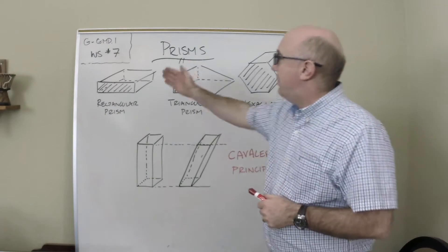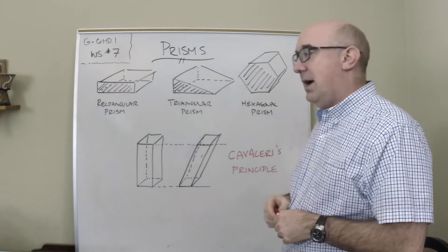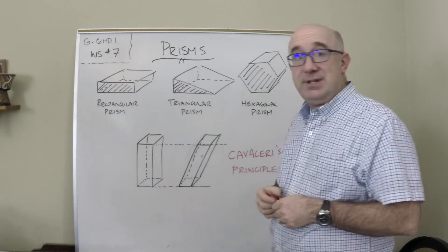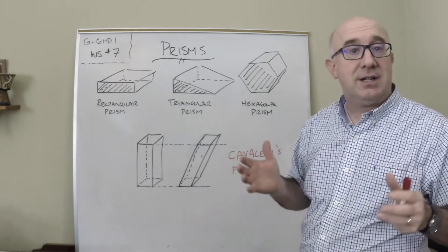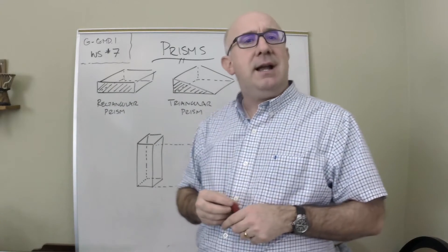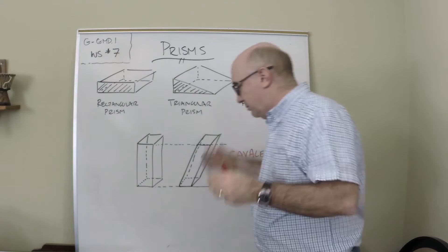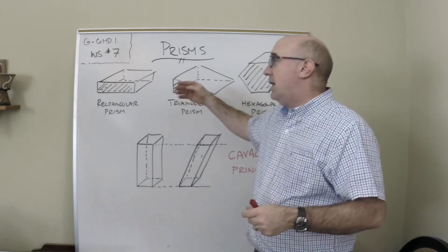Now the prism—you see a couple examples of it here—there are lots of examples of prisms in the real world. Anything that's box-like shaped, certainly, or anything that has two identical bases.